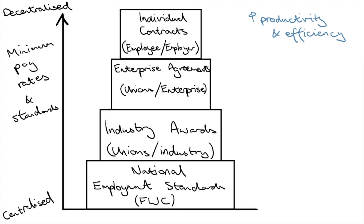Related to this is that decentralization means employers don't have to pay high wages to unproductive workers. This cost cutting, along with increased productivity, means there'll be less wage push inflation. Lower labour costs could also mean that demand for labour would expand, leading to lower structural unemployment. These are some of the reasons for the decentralization of Australia's labour market since the 1990s, including the introduction of Australian workplace agreements in the mid-2000s, which gave employers more flexibility when negotiating employment contracts.